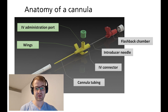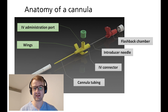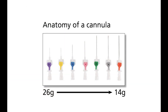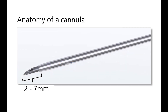Most modern cannulas have a needle safety mechanism where the sharp is covered once you withdraw the needle fully, so you won't be able to reinsert it. Common cannula gauges used in clinical practice run from 26 to 14 gauge in increasing size, and you'll need to adapt your technique depending on which gauge you're using. This is largely because of the distance between the needle tip and the start of the cannula tubing, which can vary significantly — only around 2 mm in a 22 gauge blue cannula and up to around 7 mm in a 14 gauge orange cannula.